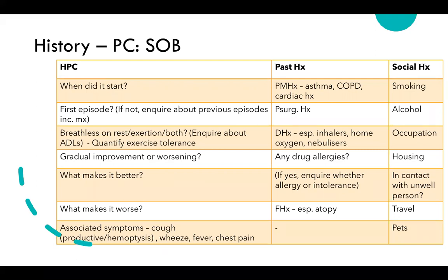Occupation is particularly important — for example, exposure to asbestos increases lung cancer risk. Ask about housing and activities of daily living. Enquire about contact with unwell people, as this may suggest infection such as TB, and about travel history. Ask about pets, as new pets can trigger asthma episodes, along with other triggers like dust or allergies.